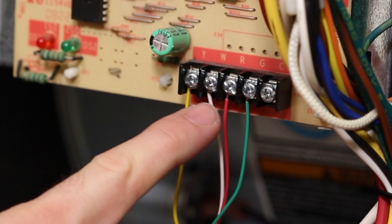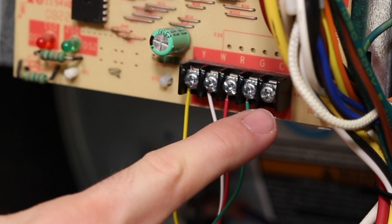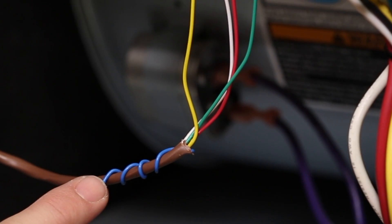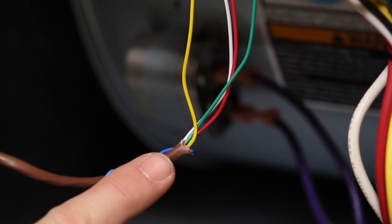Locate the wires attached to the wire terminals on the furnace control board. Once located, trace them back to the wire bundle. Look for the end of the same unused wire that is not being used at the thermostat.